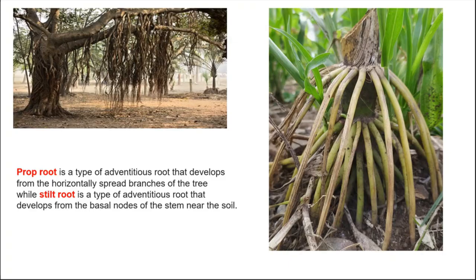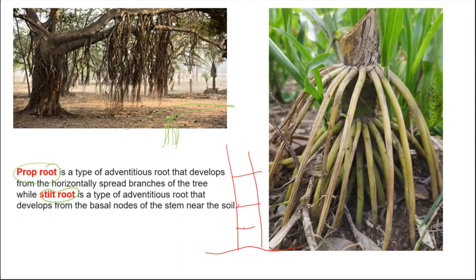There are two special types of adventitious root modifications. One is prop root and the second is stilt root. Prop roots are adventitious roots that arise from horizontal branches of a tree — they are also known as hanging roots, as seen in banyan trees. Stilt roots are also an adventitious root modification, seen in sugarcane and maize, where roots from the last node grow obliquely towards the soil. Such roots are known as stilt roots.